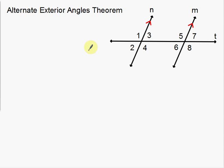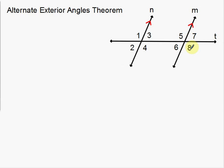Now this one we're talking about alternate exterior angles. So if we're talking about the exterior angles, that's going to be angles 1 and 2, and that's going to be the angles 7 and 8. Notice that we have two parallel lines here and a transversal T, so what I'm going to talk about is the relationship between the alternate exterior angles.